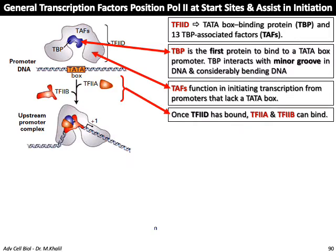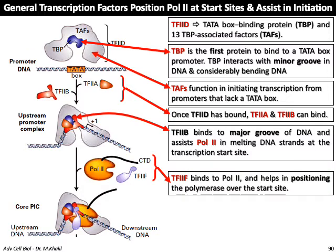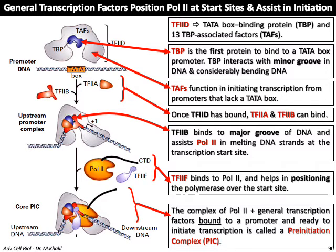Once TF2D has bound, TF2A and TF2B can bind. TF2B binds to the major groove of DNA and assists polymerase II in melting the DNA strands at the transcription start site. TF2F binds to polymerase II and helps position the polymerase over the start site to form a structure called the core PIC. The complex of polymerase II plus the general transcription factors bound to the promoter are ready to initiate transcription, and this complex is called the pre-initiation complex (PIC) or core PIC.